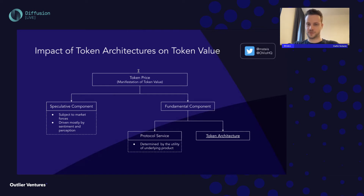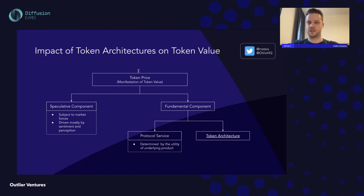Token prices can generally be broken down into two components: the speculative component and the fundamental component. The speculative component is subject to market forces and driven mostly by sentiment and perception. Token architectures don't really have a direct impact on the speculative component, but people's perception of the quality of your token does influence it. Even if your token architecture is not functional but is perceived as functional, the price is expected to be positively impacted. Currently, the vast majority of crypto asset prices are made up mostly of the speculative component.